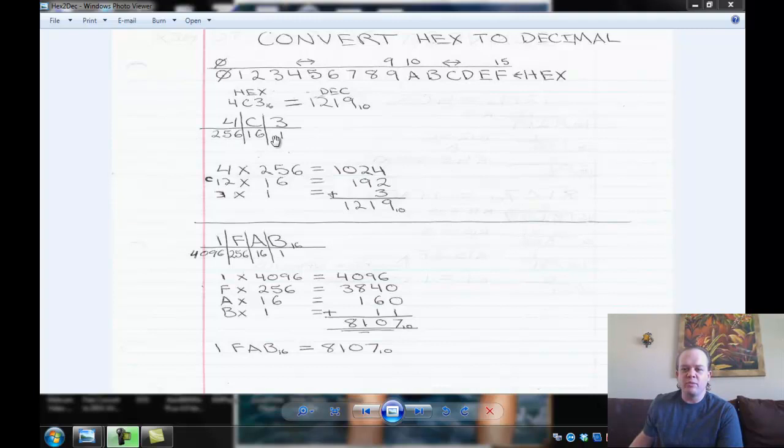Well, in hexadecimal, we have one, 16, 256, 4096, and so on. It's all powers of 16. If you don't know what a power of 16 is, I'll explain that, too.